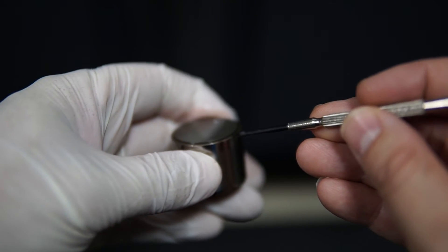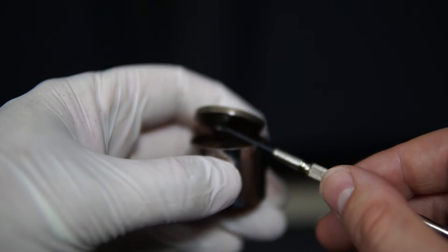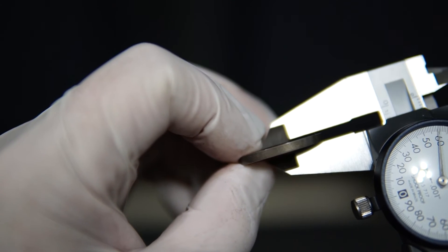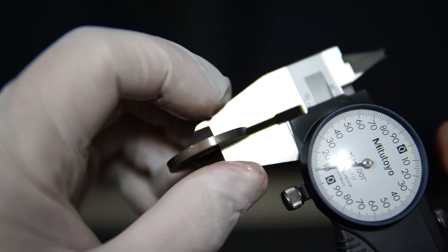For each location that was out of spec, pull the shim off the bucket and measure with a caliper or micrometer. Using that information, you can now figure out the thickness the new shim needs to be.